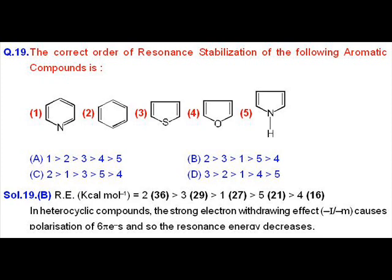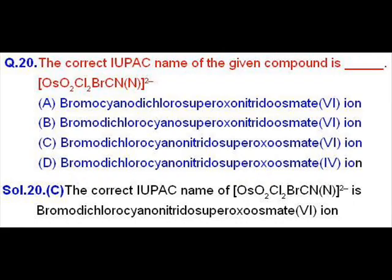And then in the last we are having pyrone because it is having oxygen which is the most electronegative atom and brings about maximum polarization of 6 pi electrons. So the order goes like 2, 3, 1, 5, 4 and the answer is B. Question number 20 is about IUPAC nomenclature of a complex compound.